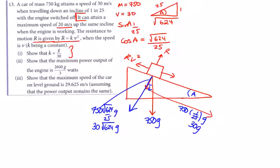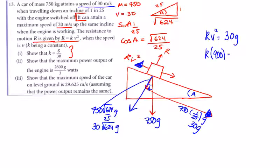When the car attains the speed of 30 m/s down the incline at constant speed, the resistance kv² equals the driving component 30g. So k times 30 squared equals 30g, meaning 900k equals 30g. Cancelling and dividing: 30k equals g, so k equals g/30. That confirms the result.